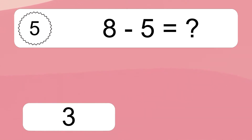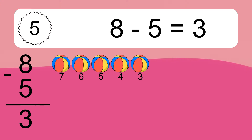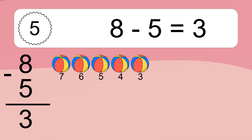8 minus 5 equals 3. Let's count it: 7, 6, 5, 4, 3.